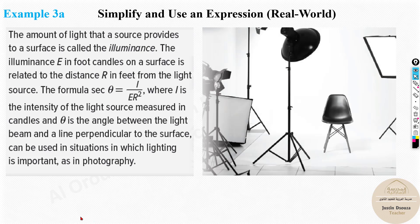Real-world problem: The illuminance E (in foot-candles) on a surface is related to the distance R and the intensity I (in candles) by the formula sec θ = I / (E · R²), where θ is the angle between the light beam and the perpendicular to the surface. Solve for E: rearranging gives E = I / (sec θ · R²) = I · cos θ / R².